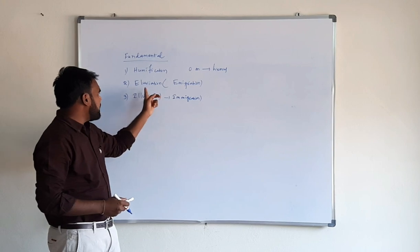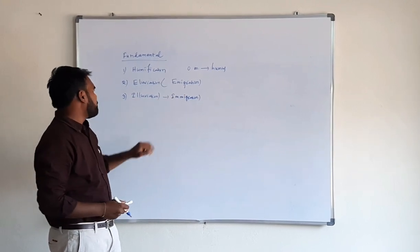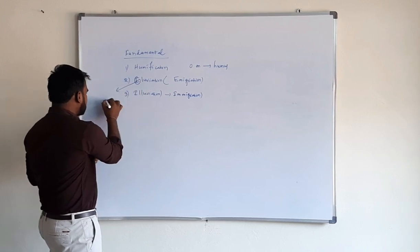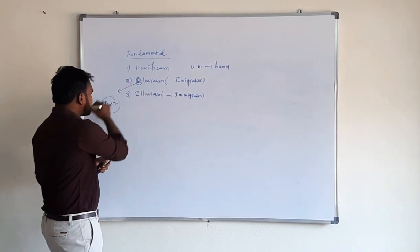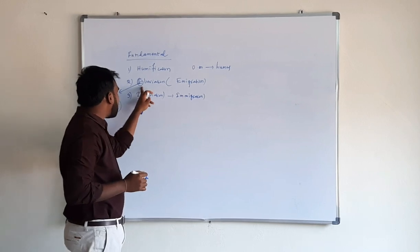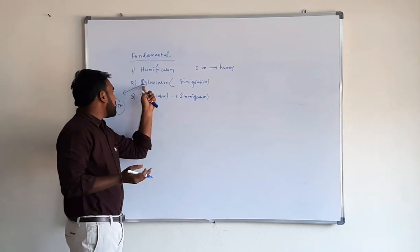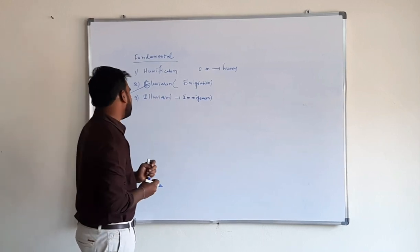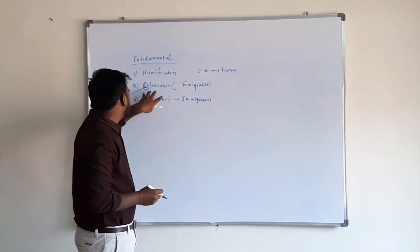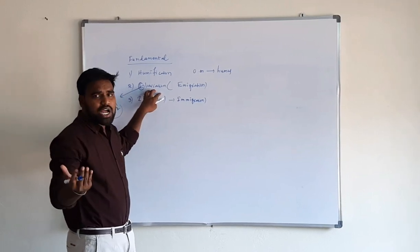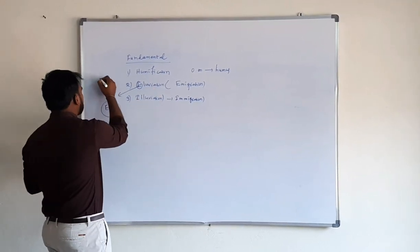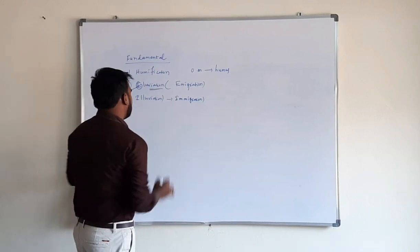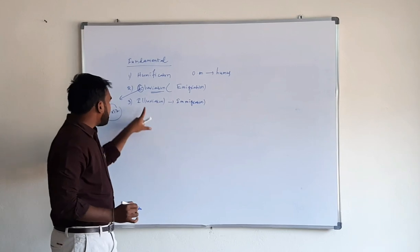Coming to eluviation, also known as emigration: here 'E' means exit, that means loss of clay and iron oxides from the E-horizon of the soil profile is known as eluviation. Eluviation especially occurs in the E-horizon, sometimes also known as the A2 horizon.